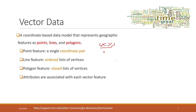A line feature is an ordered list of vectors, meaning we have a list of points connected together. We have a first point, connect to a second point, then a third — each with its own x and y coordinates. Each point can also have its own attributes. For example, a line feature can represent a road, with non-spatial attributes like road name and speed limit.